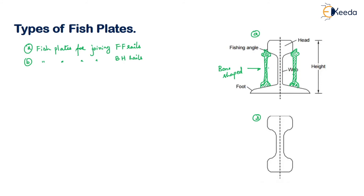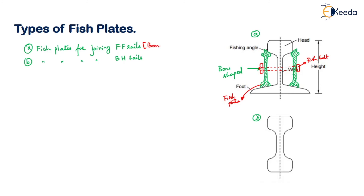To connect the two fish plates on either side, a fish bolt passes through and through. The red portion is your fish bolt and the green portion is your fish plate provided on either side. This is also called the bone-shaped fish plate.